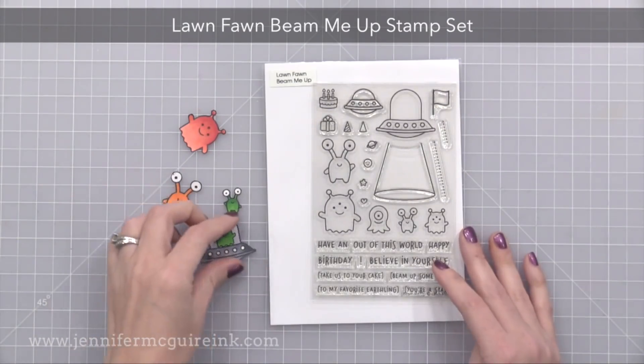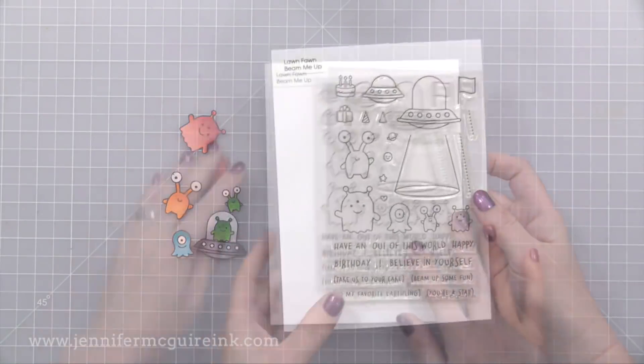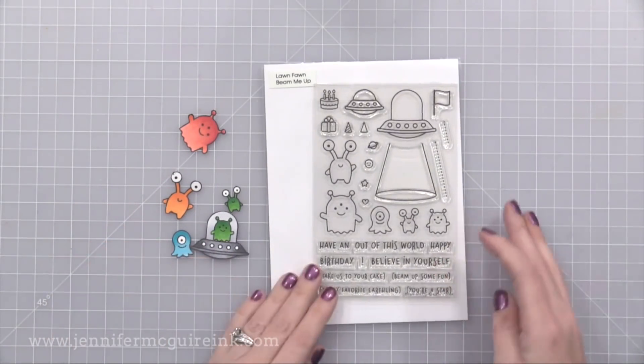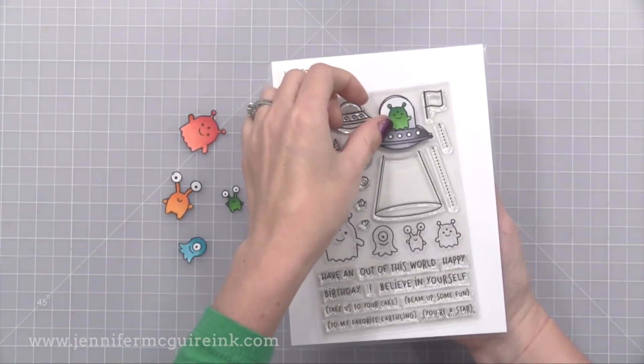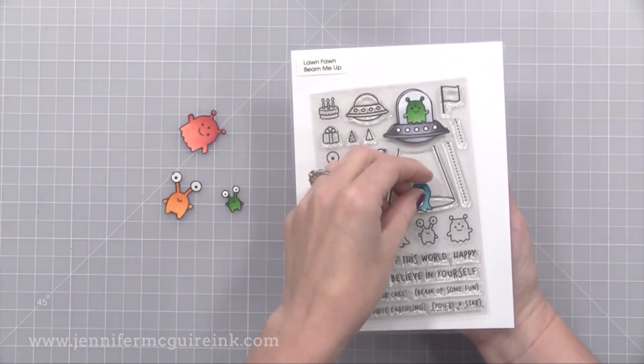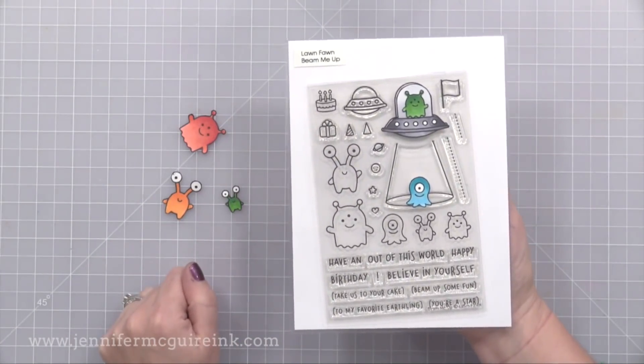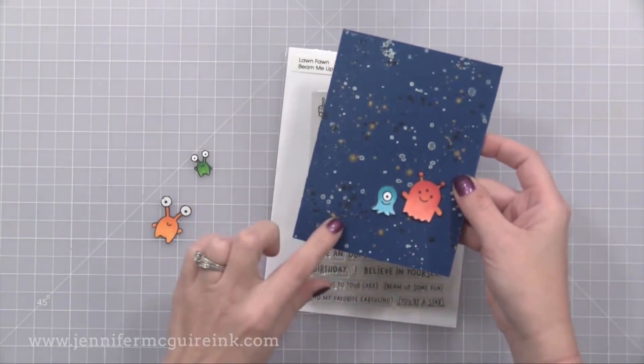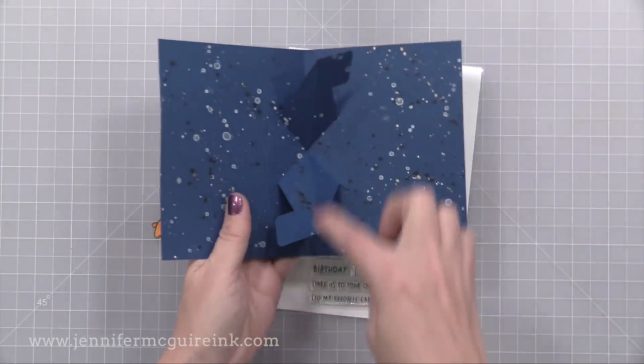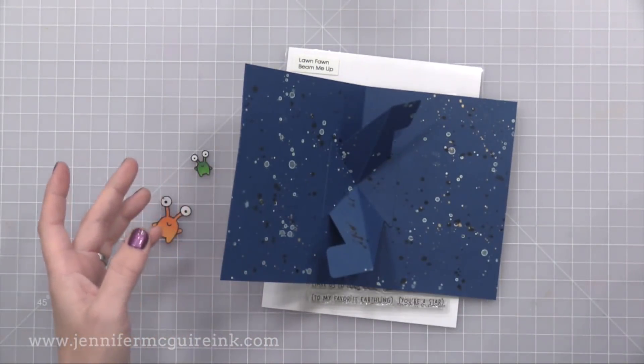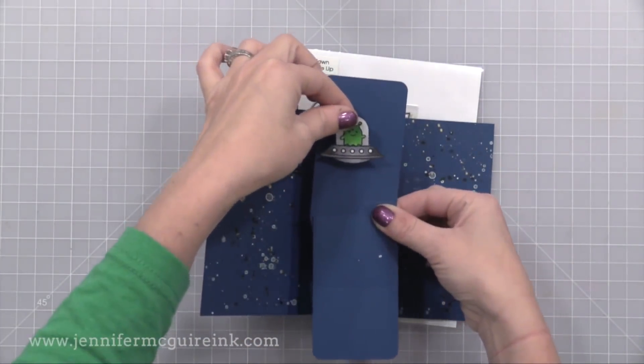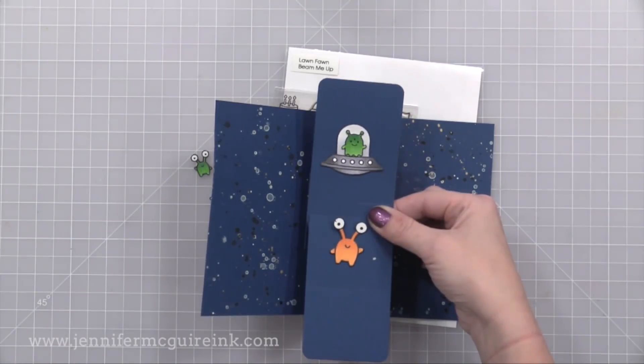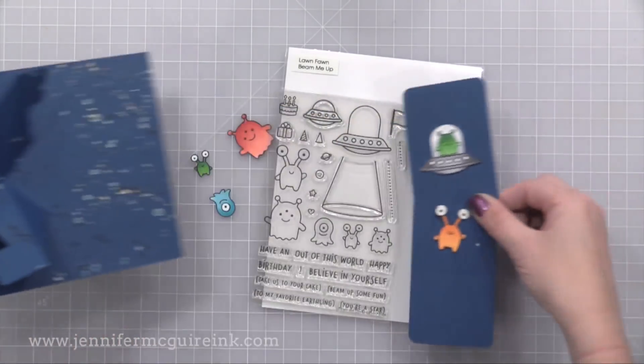Next I planned to make another pivot pop up card using this new Lawn Fawn Beam Me Up stamp set. This stamp set is so much fun and there are great playful sentiments such as have an out of this world birthday, take me to your cake, beam up some fun. I thought I'd tell you what I had planned to do even though I wasn't able to do it because Lila got sick. I did get to stamp, color and cut out some of the images and I started to create the card. I decided I was going to do a side folding card but design it so the banner pop up would end up vertical instead of horizontal. I was going to put a few aliens on the front with the sentiment then have the pop up mechanism there. When you open it up you would end up with the banner going up and down. And on that banner I was going to have the little spaceship with the little beam me up, beam up some fun or take me to your cake sentiment below that. So I'm sorry I wasn't able to create this card but I did want to share the idea with you to show you there are many ways to use the pivot pop up dies.